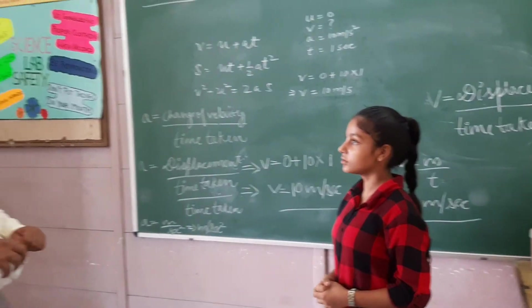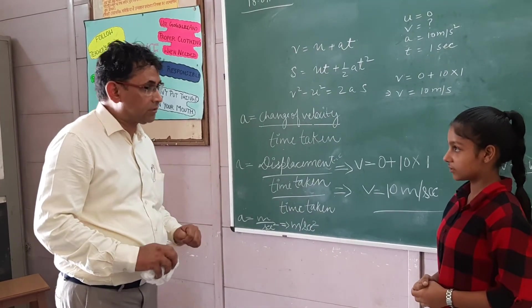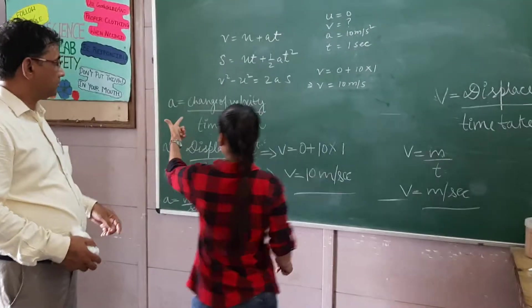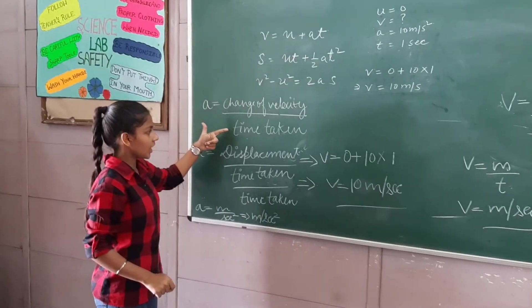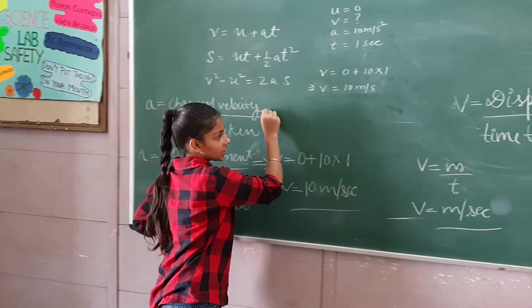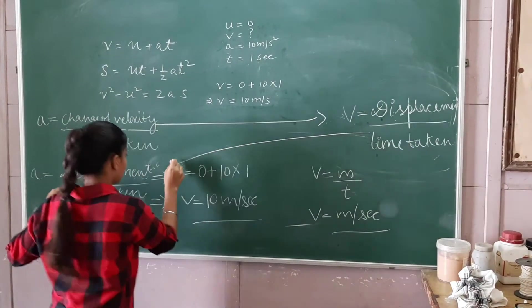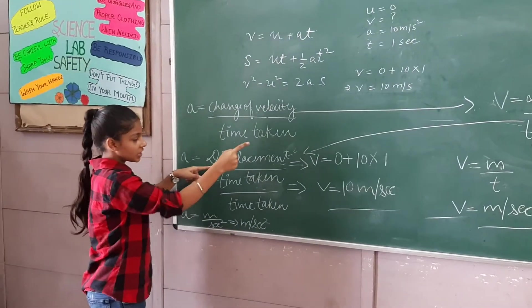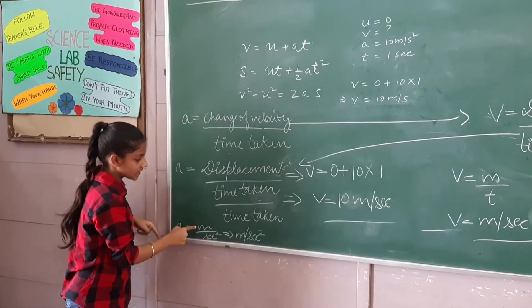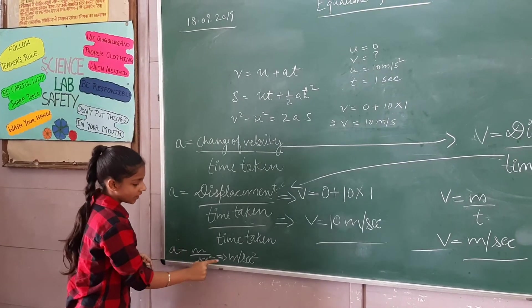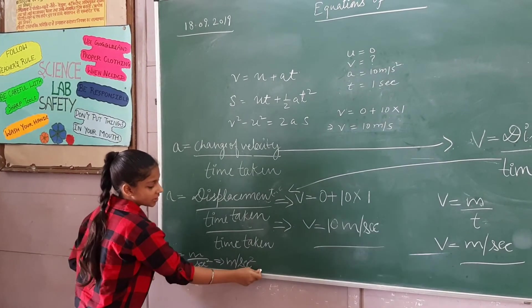Now another question for you. Why in acceleration does time come twice? Because acceleration is change of velocity divided by time taken. Velocity is displacement upon time taken. So acceleration is displacement divided by time squared. We have meters and two times second, so meters per second squared. Very good.